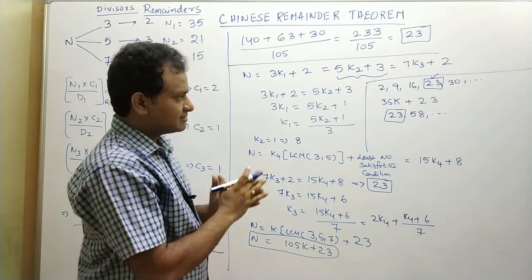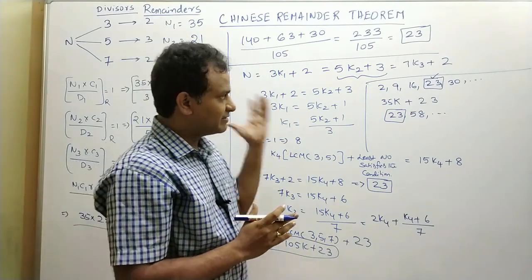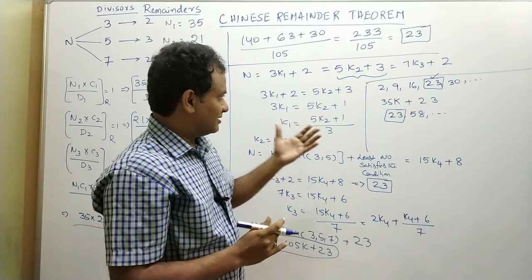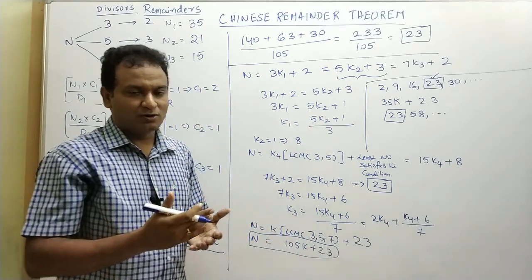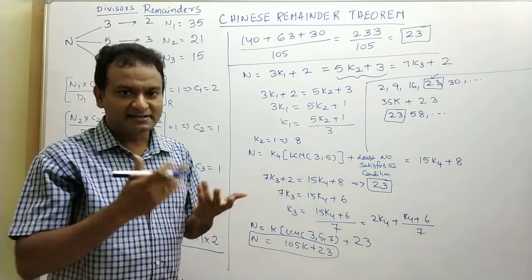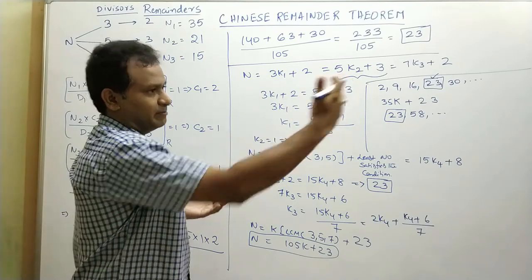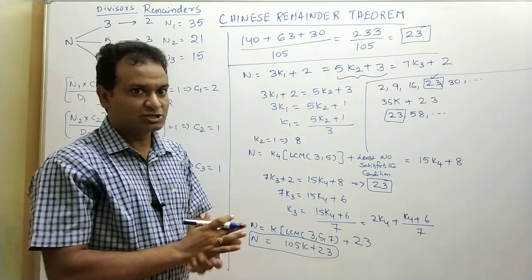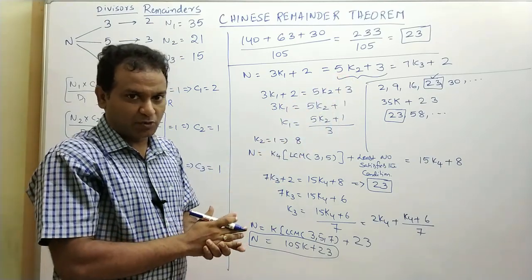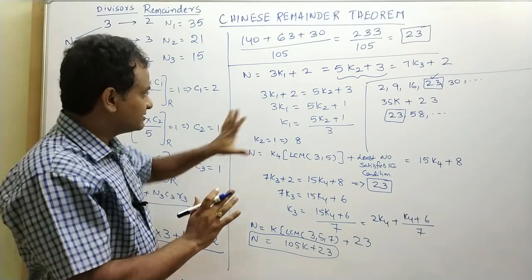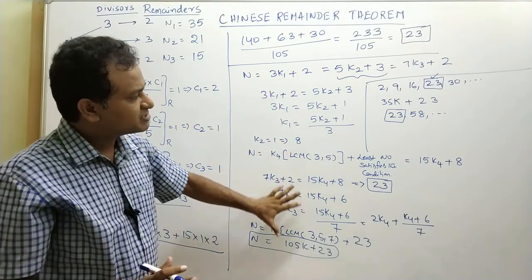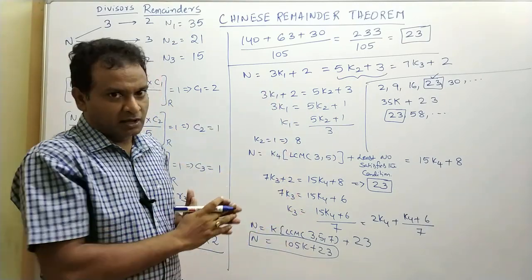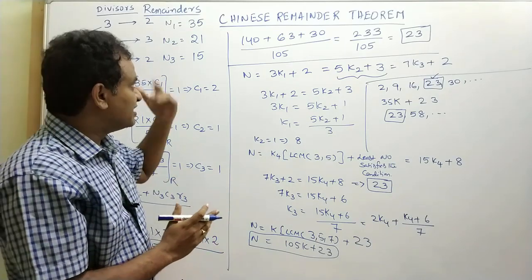This is the simplest method, but sometimes the minimum number goes up to 500 or 600, in which case you have to check a lot of numbers — quite difficult from an examination point of view. That is why the algebraic shortcut method is the most efficient method for solving any CRT question.